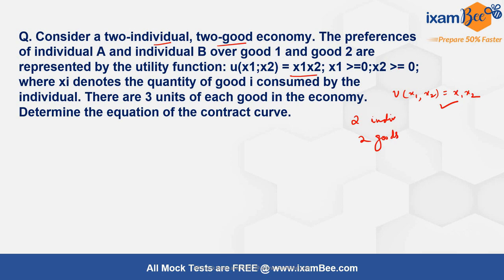It is also given that there are three units in total of both commodities in the economy. Now we have to find the equation of the contract curve. The contract curve gives you the set of all Pareto optimal allocations.